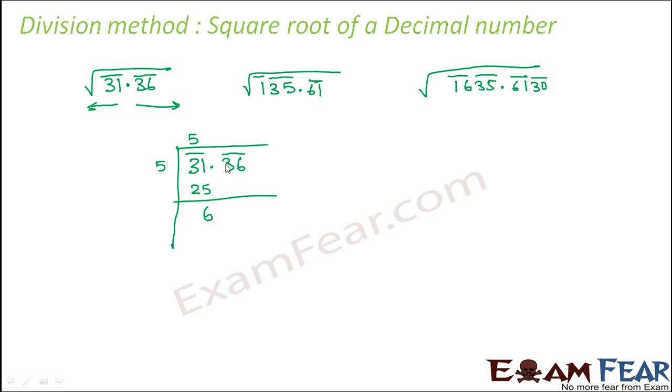The remainder would be 6. Now what we do, we bring down the next numbers under the bars. So the next numbers are 36. But here you have a decimal point before 36. So in the quotient, you put a decimal point. That's the only thing you have to do.